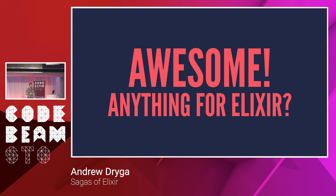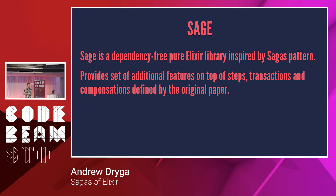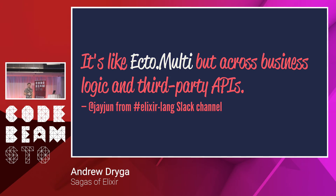The Saga idea sounds really awesome — is there something we can use? The answer is yes. There are two libraries: one for Erlang called Gisla by Mark Allen, and the second one is Sage. Little disclaimer: I'm the author. It's a dependency-free, pure Elixir library inspired by the paper but providing a set of features on top of it. For people familiar with Ecto, there's a nice quote: it's like Ecto.Multi but across your business logic and third-party APIs.